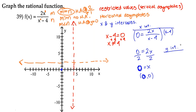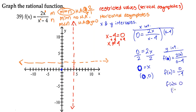For our y-intercept, we set x equal to 0. So f(0) equals 2 times 0 over 0 minus 4, which gives 0 over negative 4, which is just 0. That's the same point as our x-intercept, so our only intercept is (0, 0).